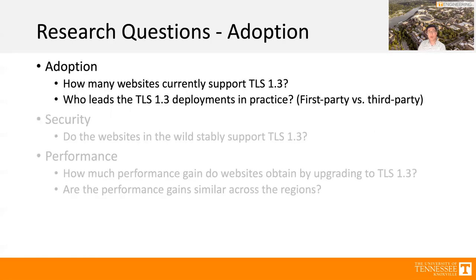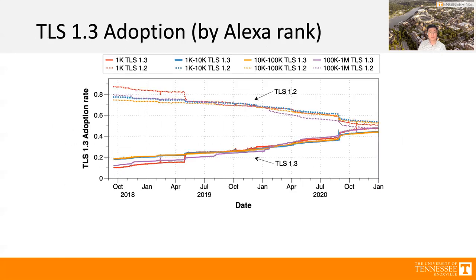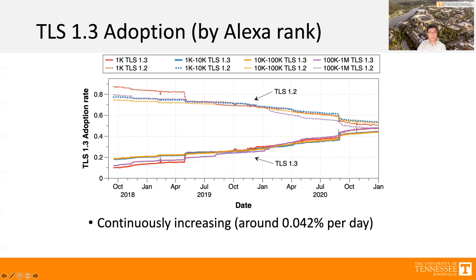Let's discuss what we found in this paper, starting with adoptions. As you can see in the graph, the solid line indicates TLS 1.3 and the dotted line is TLS 1.2. TLS 1.3 is continuously increasing at around 0.042% per day — very slightly but continuously increasing. However, TLS 1.2 is continuously decreasing. The data was collected until December 31st, 2020, at which time the adoption rates were almost similar — nearly 50% each.